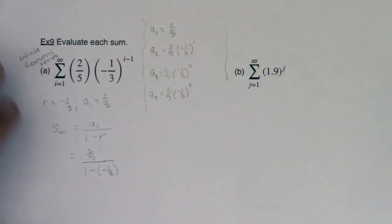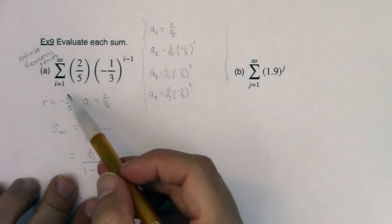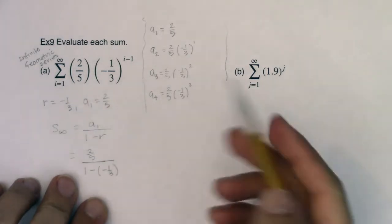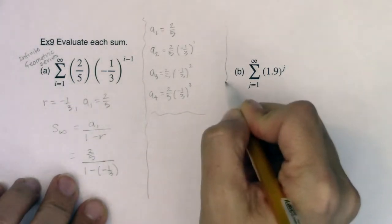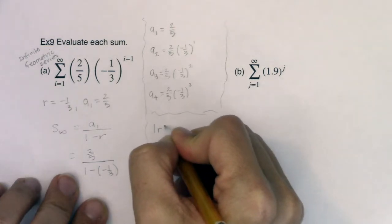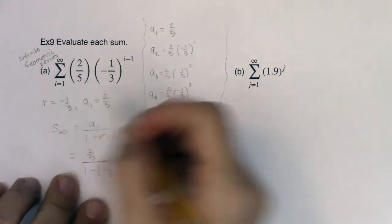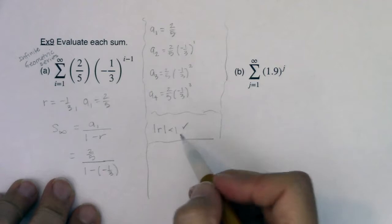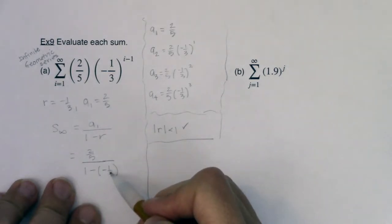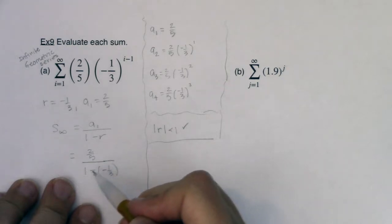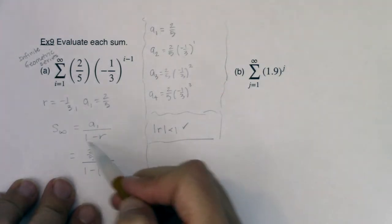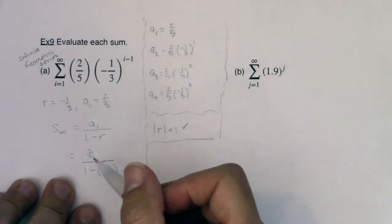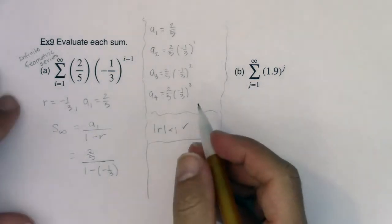Before I finish out this formula, it's a really good thing to check that r is safe. The absolute value of r has to be less than 1. In this case, the absolute value of r is 1/3, and that is less than 1, which means I can keep going with this formula. If r were greater than 1 or less than negative 1, I would stop and say the series diverges.